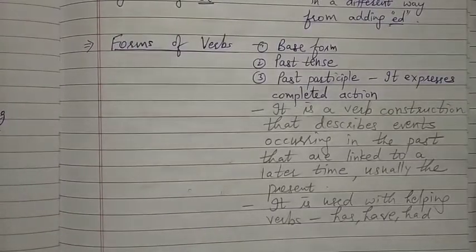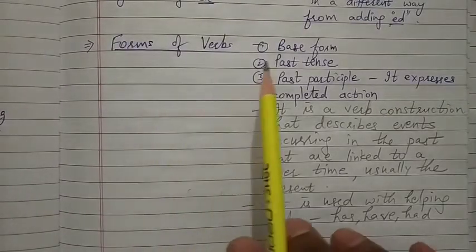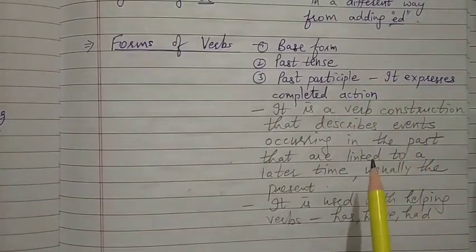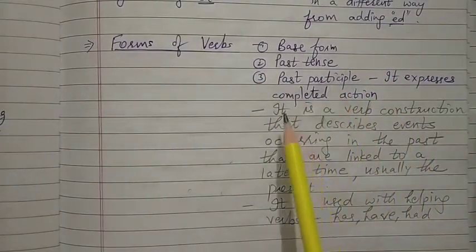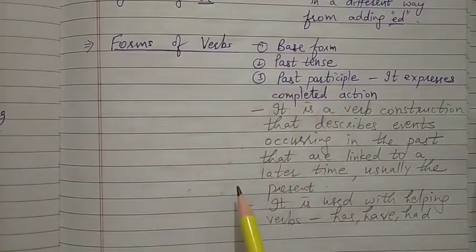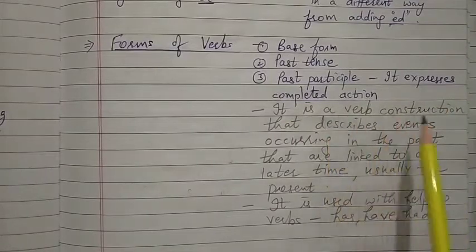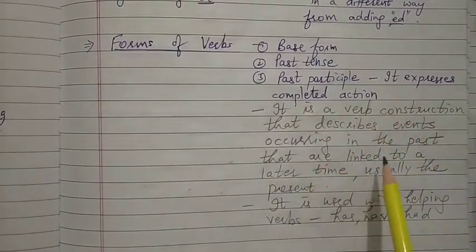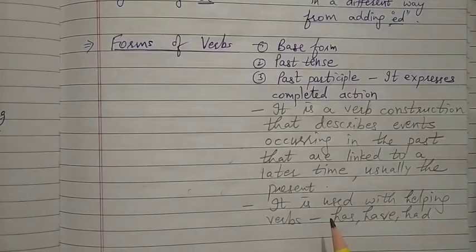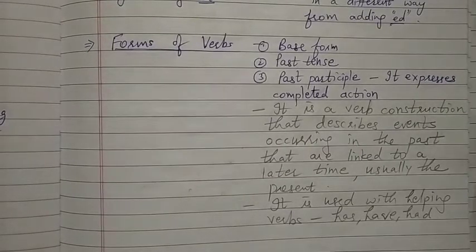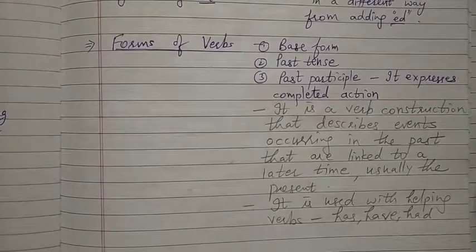There are three forms of verbs: the base form of the verb, the past tense of the verb, and the past participle of the verb. The past participle expresses completed action — a verb construction that describes events occurring in the past linked to a later time, usually the present. It is used with the helping verbs has, have, and had.